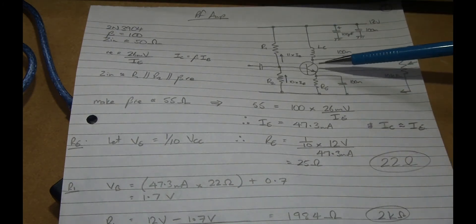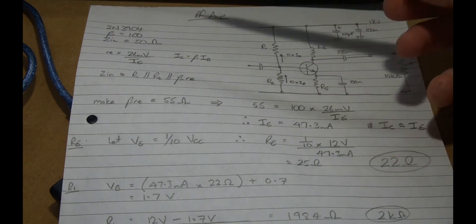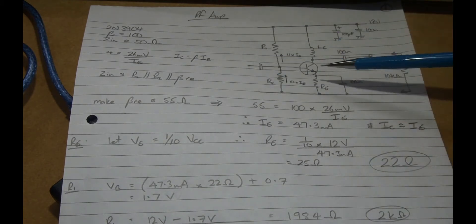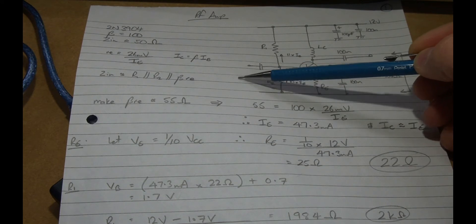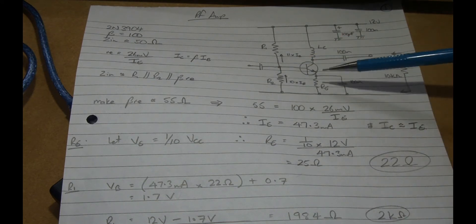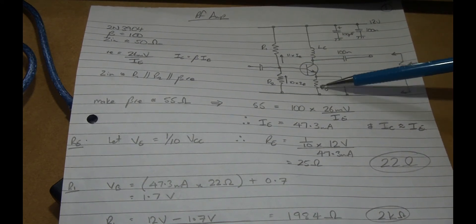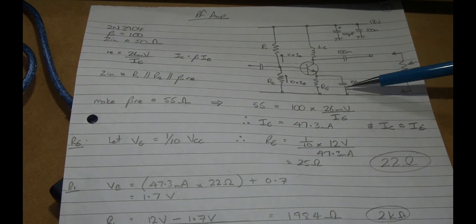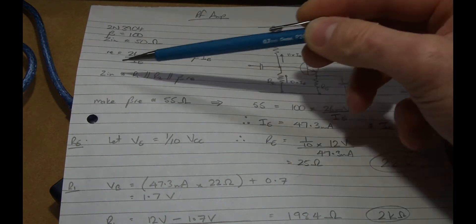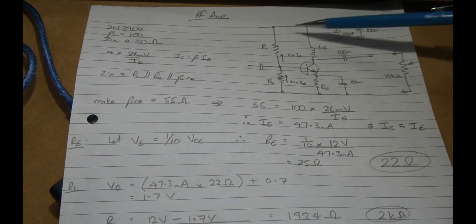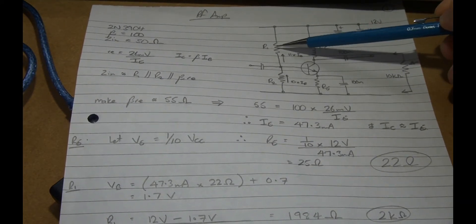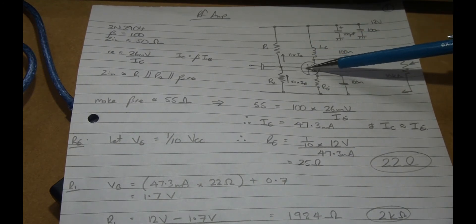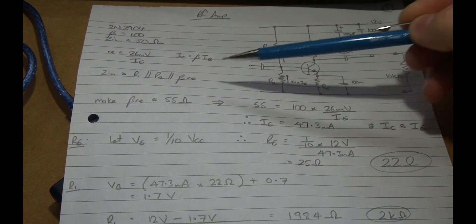Make an assumption for the 3904 that the beta is around 100. In this particular configuration I want to try and aim for a Z in of around 50 ohms to match the antenna. My emitter resistor here I'm going to have fully bypassed, so if that's the case then my Z in is going to be R1 because this is well bypassed. This is essentially folded over to earth, will be R1 in parallel with R2 for the voltage divider in parallel with in this particular case beta Re, little Re that is.